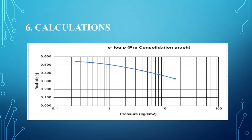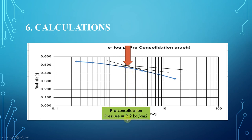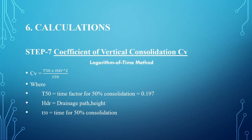Using the actual graph from the experiment: identify the point of maximum curvature, draw the horizontal line, draw the tangent, draw the angle bisector, and extend the linear end portion backward. Where it intersects the angle bisector, read off the pre-consolidation pressure. In this case it comes out to be 2.2 kg/cm².